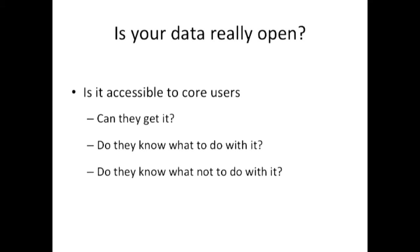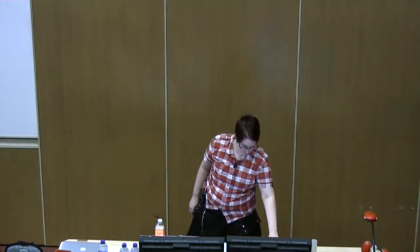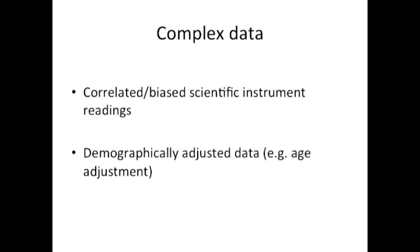Is your data really open? Is it accessible to your core users? Who are your core users? We're going to talk about that. Do they know what to do with it? And really important for doing good science, do they know what not to do with it? Can you help your users avoid newbie errors? I work with scientific data, so that's the focus of this talk. And scientific data is often really complex data. We can have correlated or biased problems in scientific instruments. But we can also do a lot of stuff to adjust our data before sending it out, or we might send it out raw and know that those adjustments need to be made. In either of those ways, you need to communicate that.